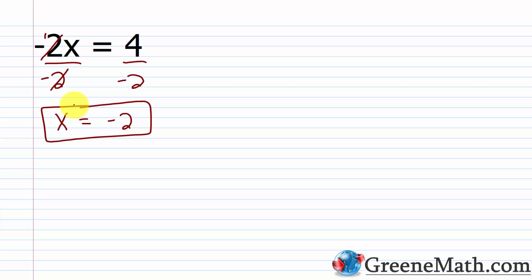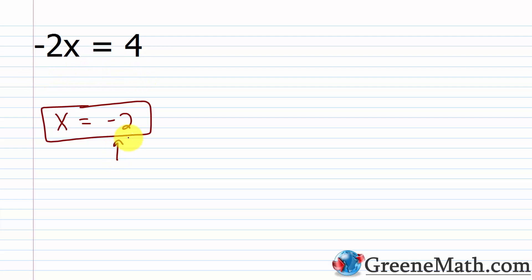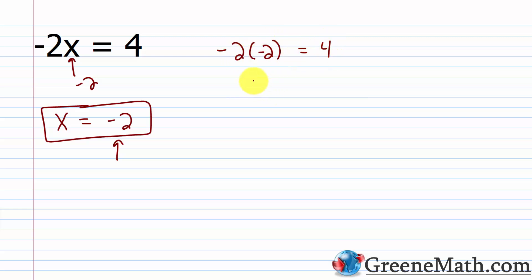The reason it's called a conditional equation is because it's true under this specific condition: that x is equal to negative 2. If I plug in negative 2 for x, I get negative 2 times negative 2 equals 4, and the left side simplifies to 4. So 4 equals 4 — that checks out.